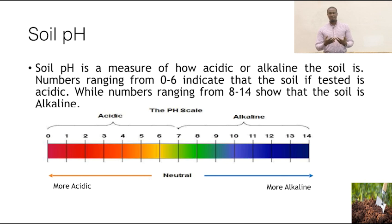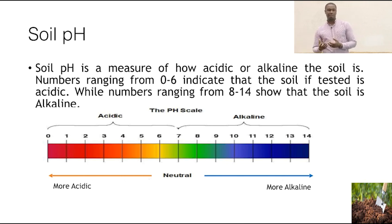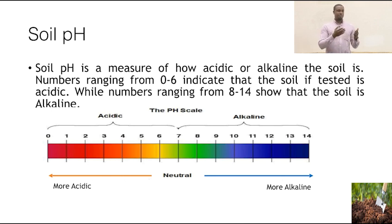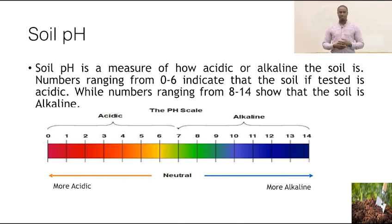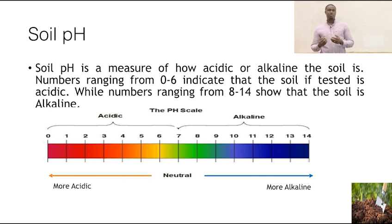Listen carefully because this might sound a little confusing. As the numbers go towards 0, you have a stronger acid being formed. As the number goes towards 14, you have stronger alkalines being formed. From 0 to 3 you have strong acids, and as you move closer to 7 — so 4, 5, and 6 — you have weaker acids. The same for alkaline: from 8 to 10 the alkaline would be weak, and going up to 11, 12, 13, and 14 you have stronger alkalines. A low pH refers to acidic, and a high pH means it is alkaline.